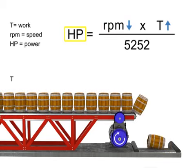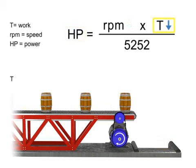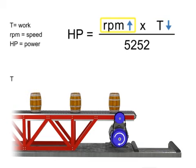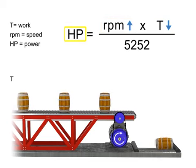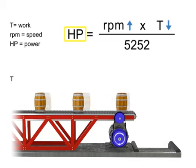Similarly, the opposite is true. If torque decreases, the speed of the conveyor increases, and the horsepower generated by the motor remains constant. Thank you.